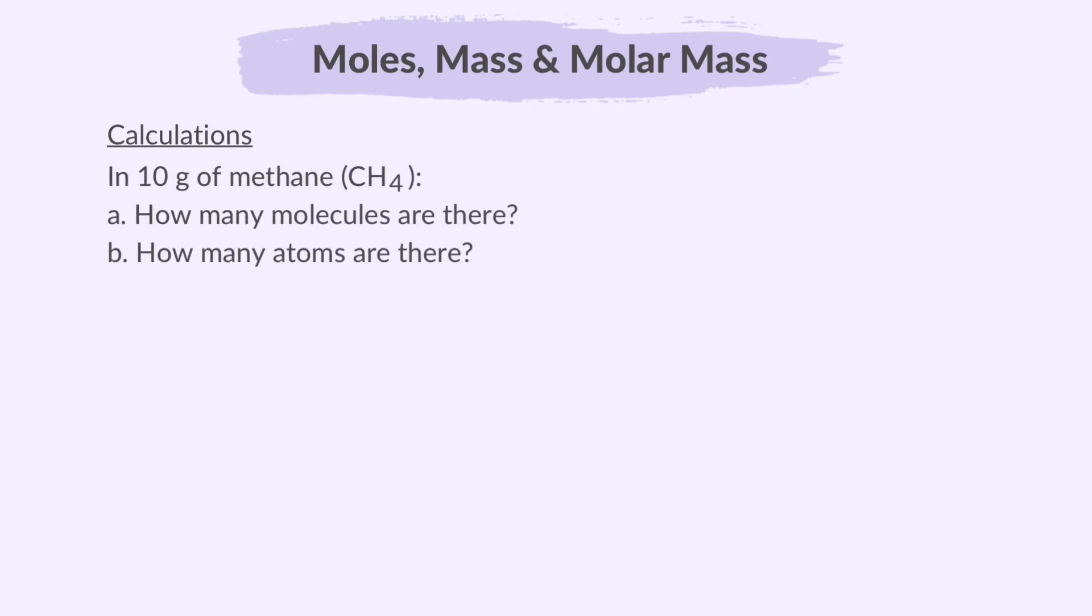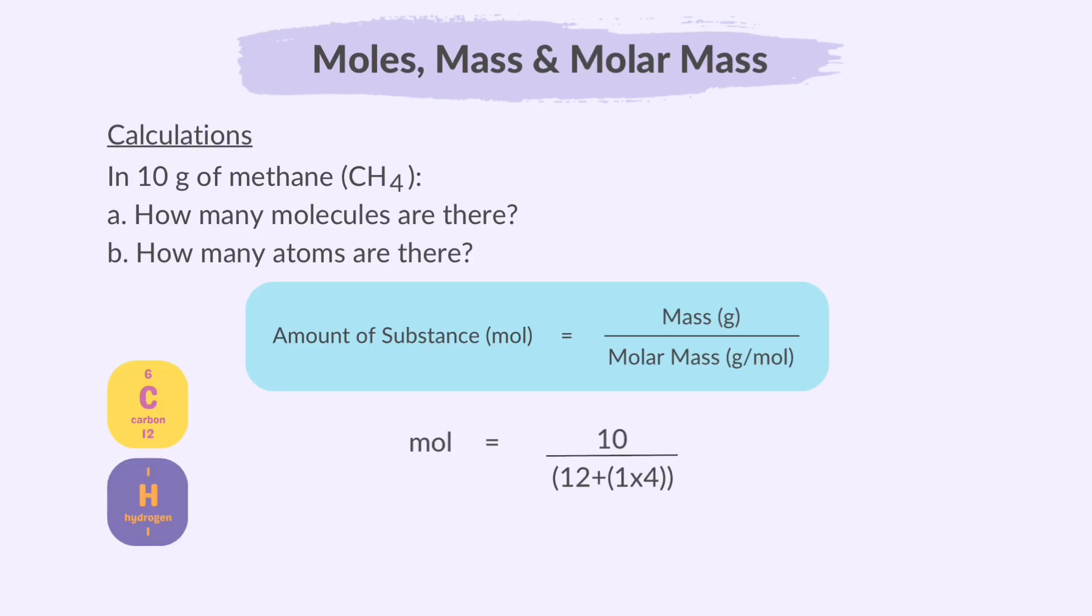Another example: in 10 grams of methane, how many molecules are there and how many atoms are there? In a question like this, the first step would be to find out how many moles are there in this mass of methane. Number of moles equals 10 divided by 12 plus 1 times 4, since there are 4 hydrogen atoms. That will be 0.625 moles.